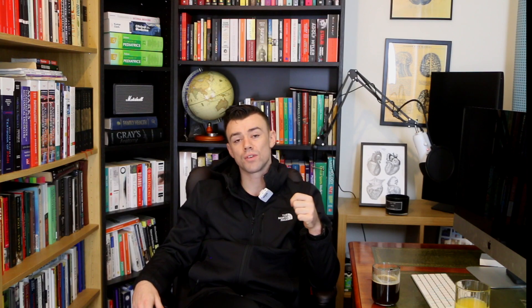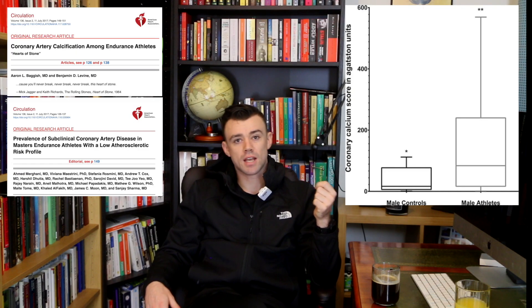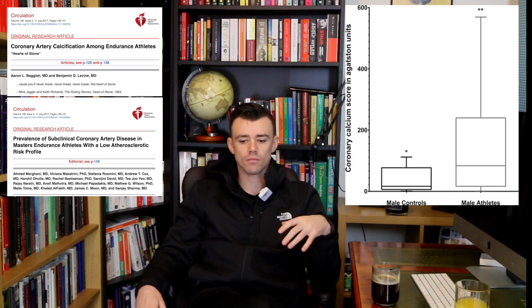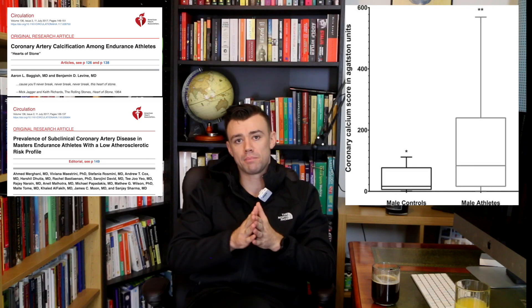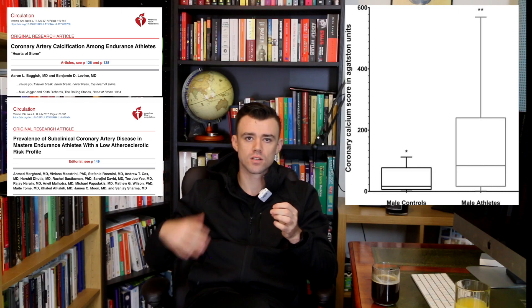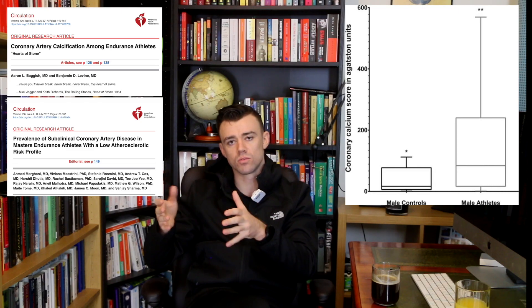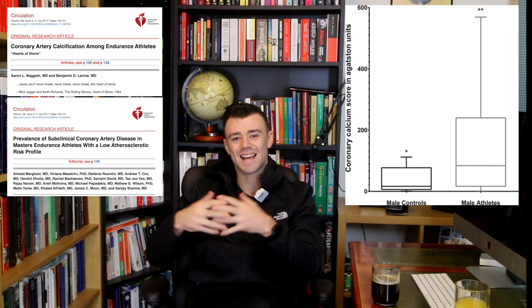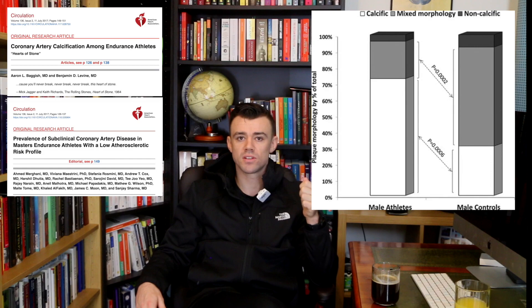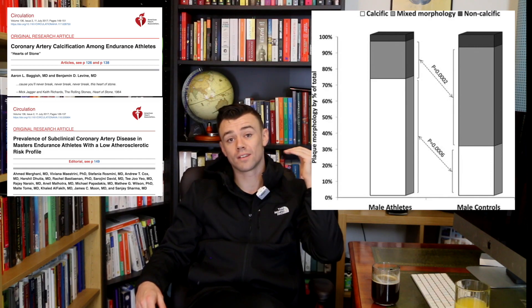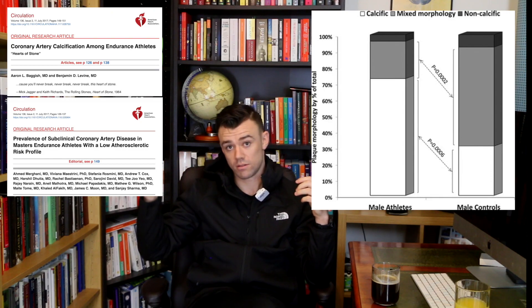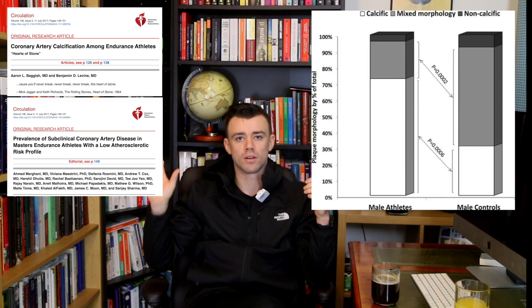Generally what happens during the atherosclerotic process in normal general population individuals is they will get the deposition of lipids or fats within the walls of the arteries over many years. This will eventually become a more complex process involving the immune system and lead to calcification on top of that plaque. In athletes what we see is a much higher rate of these calcified plaques as opposed to the mixed plaques where you've got calcification but also a lot of lipid.